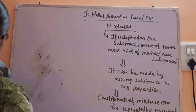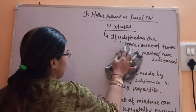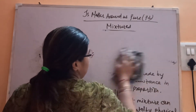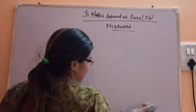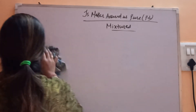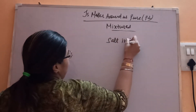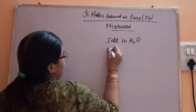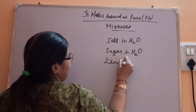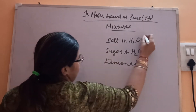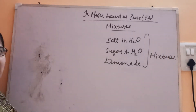Now, based on the nature of its composition, mixtures are of two types. In general, common examples of mixtures include salt in water, sugar in water, and lemonade — that is your nimbu pani. All of these are mixtures. Now we will classify what kind of mixtures they are.